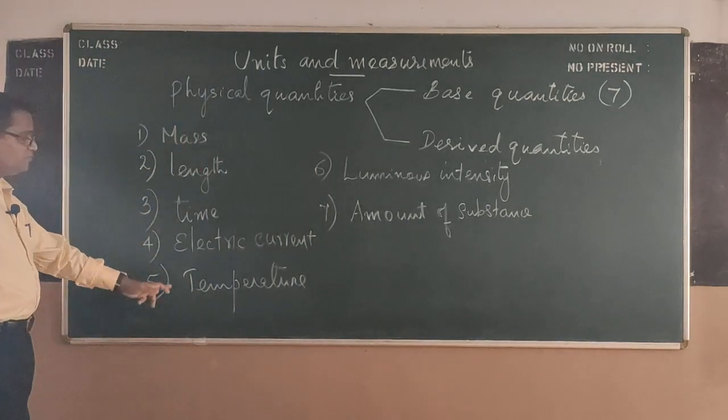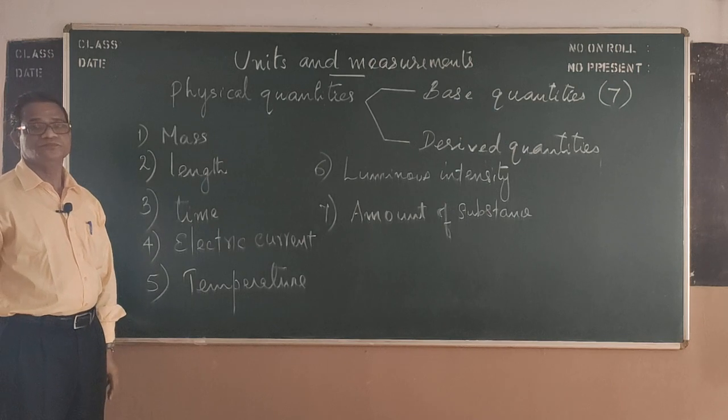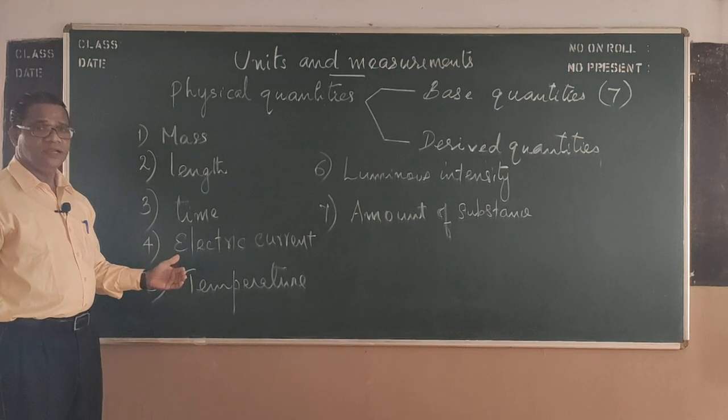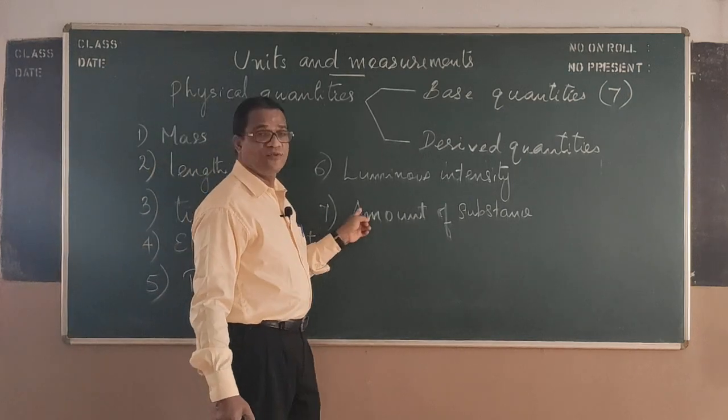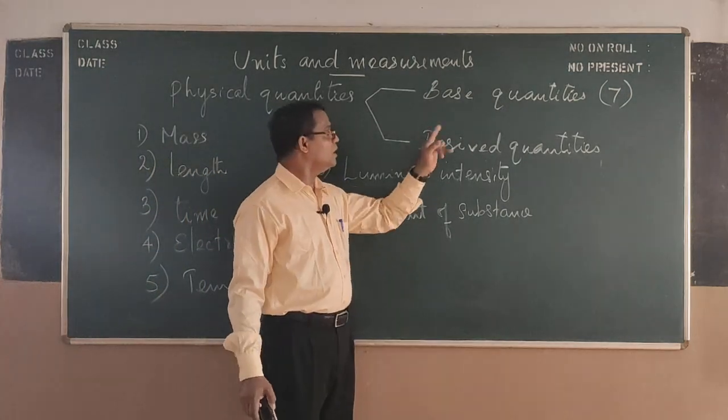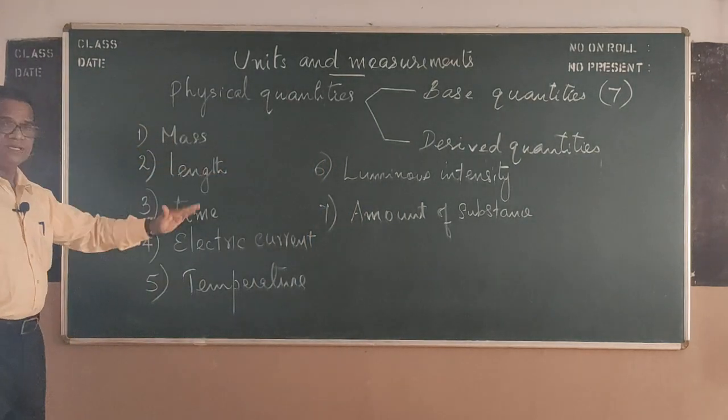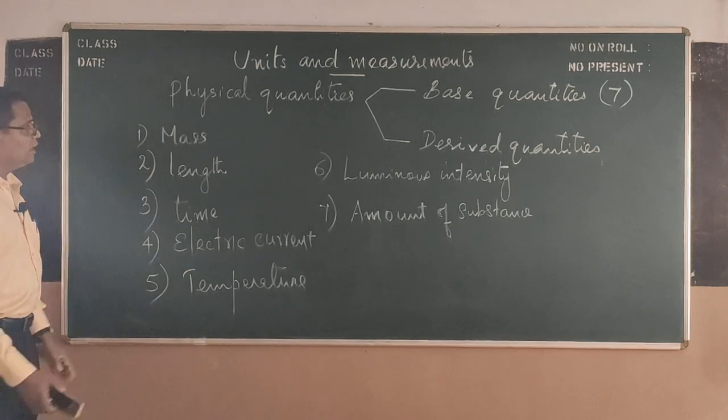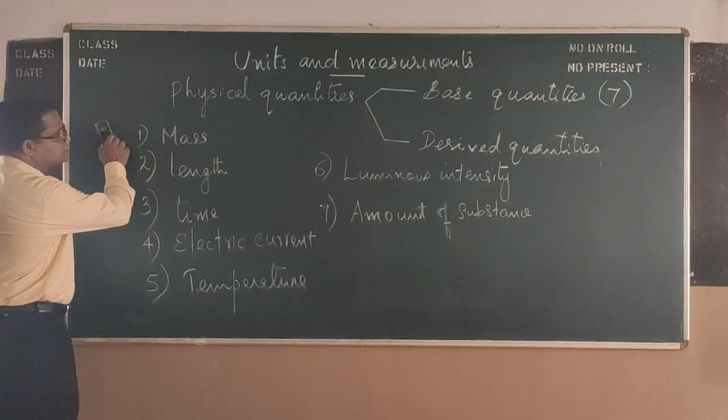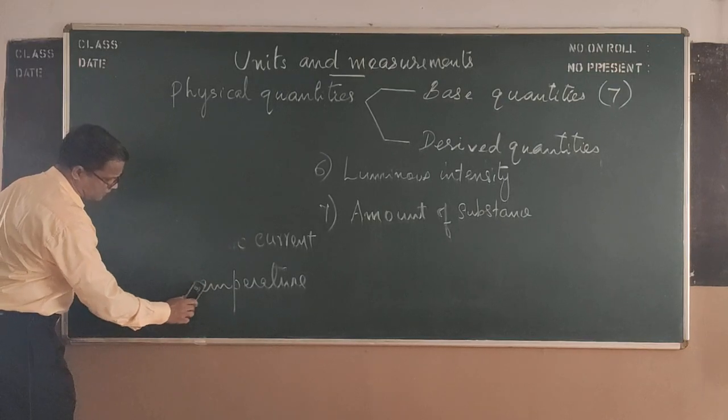Now these are the seven fundamental quantities you are supposed to understand. Now any quantity which are obtained from these fundamental quantities are called derived quantities.